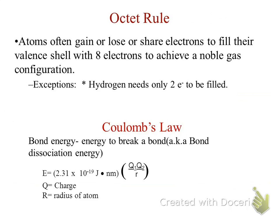Exception: hydrogen only needs two electrons to be filled, so it's not going to go all the way to the full eight. Now, Coulomb's Law comes more into play when we deal with ionic bonding, because we have to deal with charges — Q1 is the charge of our metal, Q2 is the charge of our non-metal, and R stands for the radius. Bond energy, or bond dissociation energy, is the energy needed to break a bond. This is going to become very important as we continue throughout this unit.